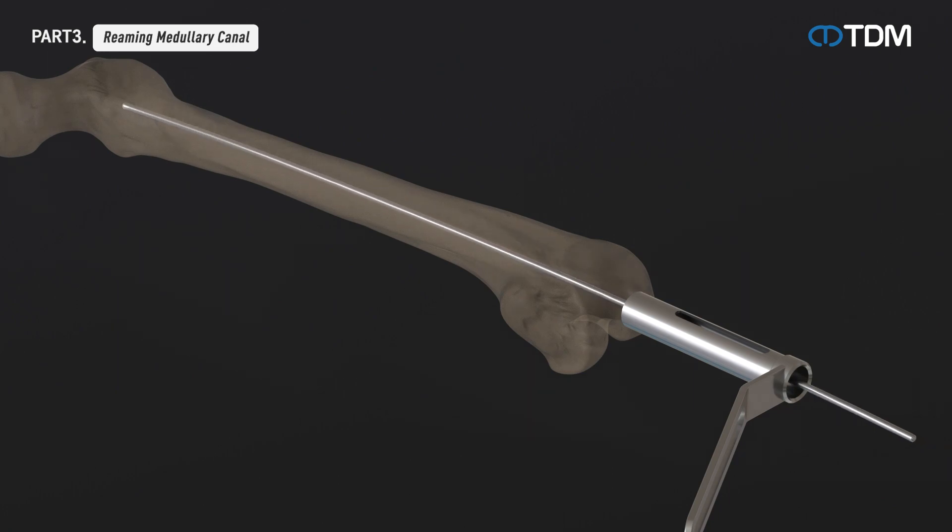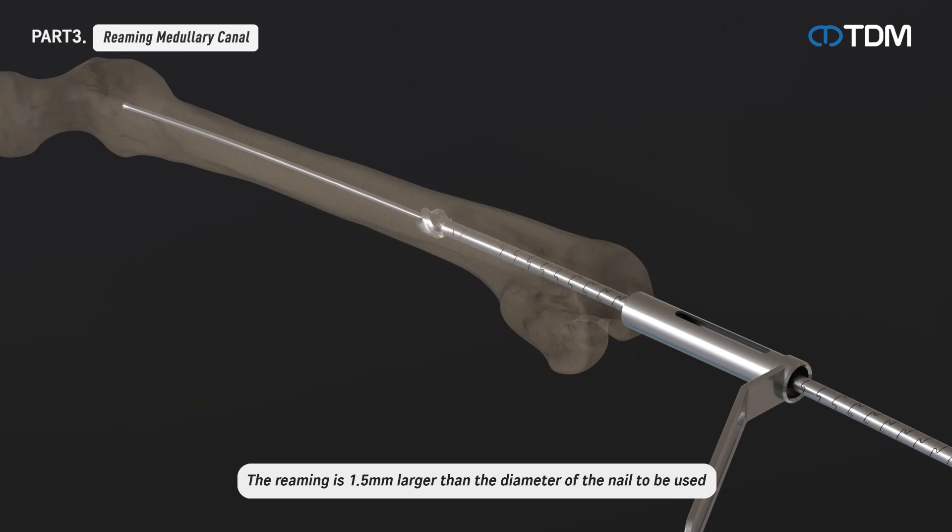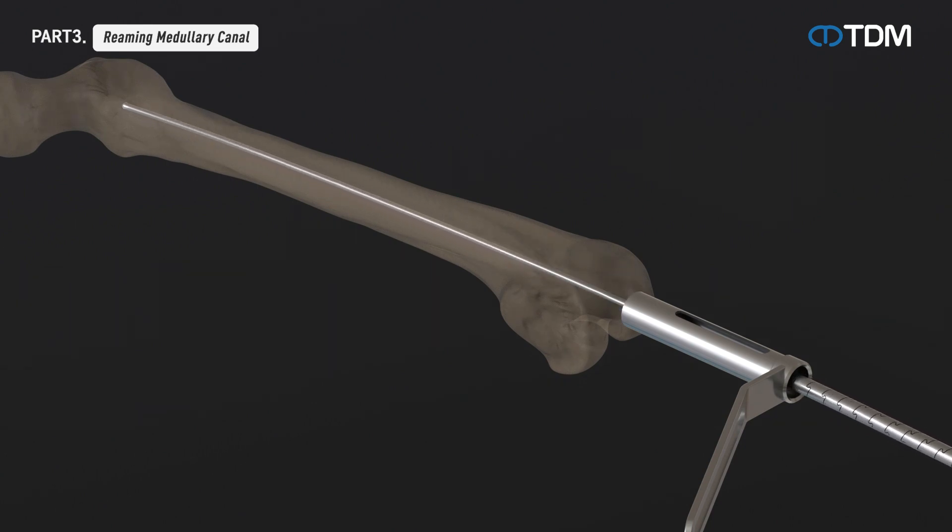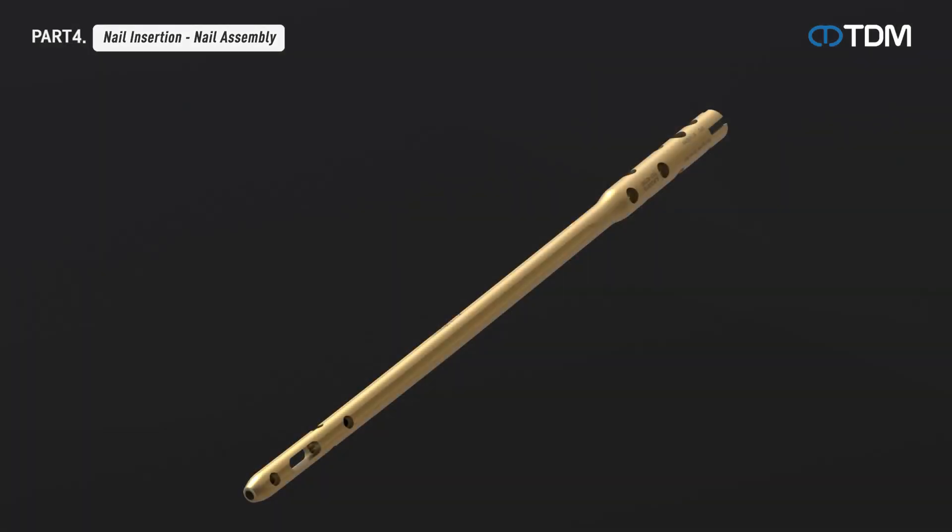Insert the reaming rod with the ball tip to the desired depth. Using a flexible reamer shaft, reaming is carried out along the reaming rod to the desired size by starting with an 8.0 millimeter reamer head and increasing by 0.5 millimeters. The reaming rod with the ball tip is not removed even after reaming is completed.